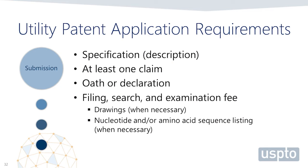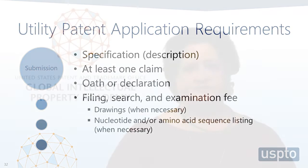Here are the requirements for a utility patent application. It must include a written description or specification of the invention — we talked about that requirement earlier — at least one claim, drawings if necessary to understand the invention, an oath or declaration stating, among other things, that the inventor or inventors truly came up with the invention, and for biotechnology inventions, a nucleotide and/or amino acid sequence listing, if necessary.